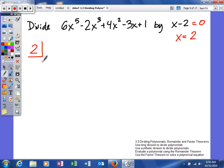We start with our dividend and write down the coefficients in descending order. Here's my x^5 coefficient, 6. I don't have an x^4 term, so I'll put 0. Negative 2 is my cubic coefficient, then my quadratic is 4, linear is -3, and my constant is 1.